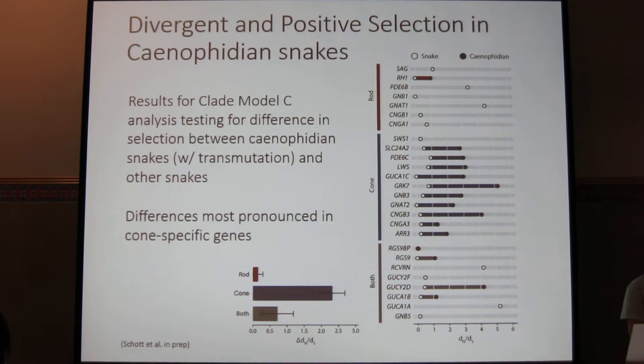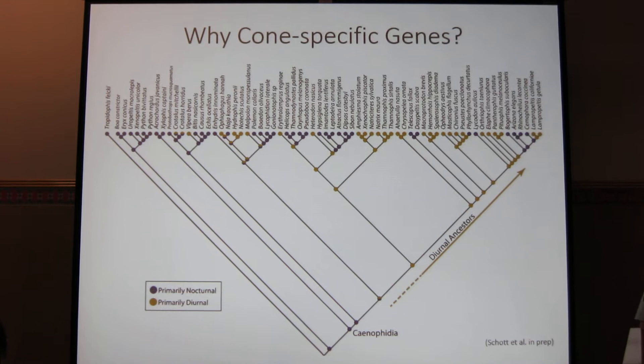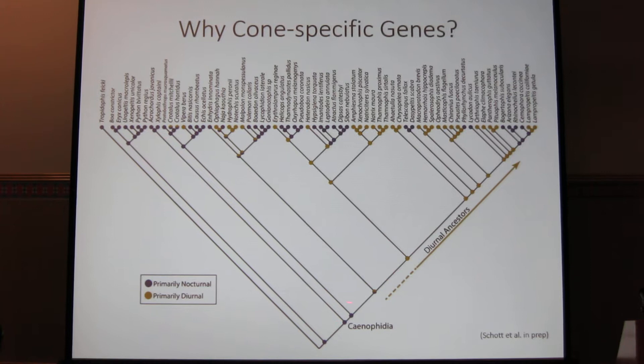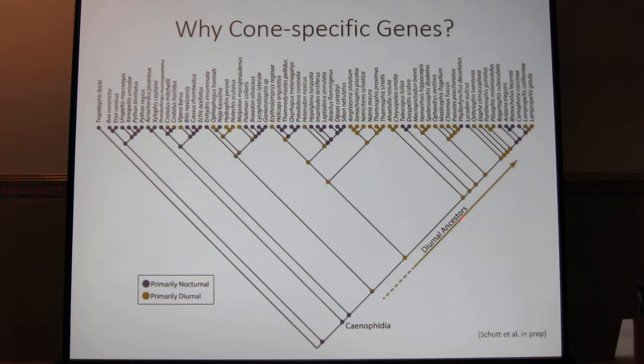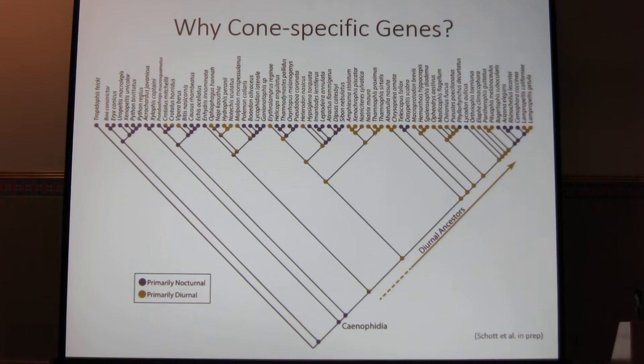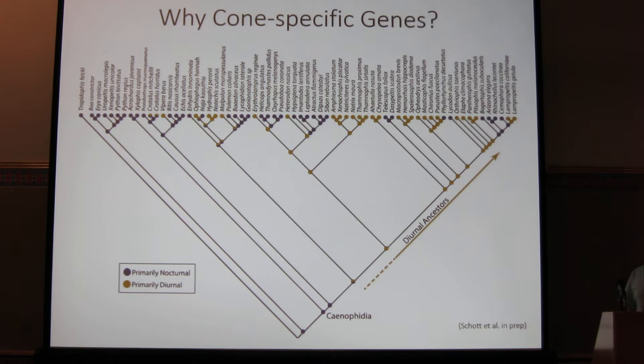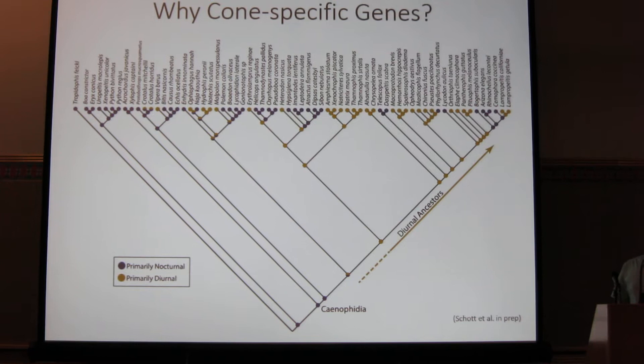This was surprising to us, so in order to look at this further, I did an ancestral reconstruction of activity patterns, grouping them into primarily nocturnal and primarily diurnal. We can see that at the base of snakes, as expected, we have nocturnality, but early on in Caenophidian evolution we have a series of diurnal ancestors, followed by repeated reversions to nocturnality. We think this represents a single transition from the duplex to all-cone retina, followed by repeated evolution of the all-rod retina. As we switch from the all-cone to all-rod retina, those cone-specific genes would need to adapt to function under dim-light conditions, which may help explain those results.